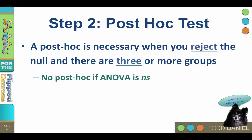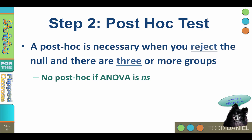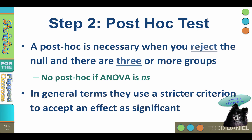If the omnibus ANOVA test is significant and differences exist, you follow up with a post hoc test. Post hoc tests compare each individual mean against the other means, and the post hoc is necessary whenever you reject the null hypothesis and there are three or more groups. You would not do a post hoc test if the ANOVA was not significant, nor would you need one when comparing only two groups — if a t-test is significant, you can just look at the two group means and see which is higher. Post hoc tests use a stricter criterion to accept an effect as significant, controlling for family-wise error rate and the increased likelihood of type 1 errors that occurs when doing multiple comparisons on the same data.